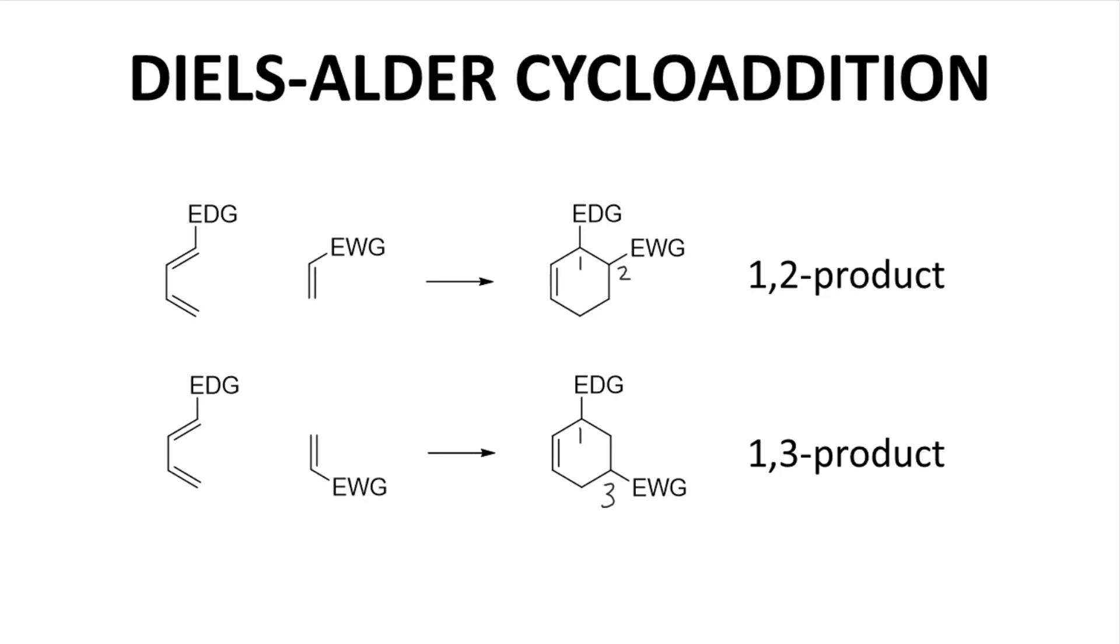The regioselectivity of this reaction is determined by the electronic bias of the electron donating and electron withdrawing groups. The electron donating group is electron rich and polarizes the diene in this manner. Note that these are not formal charges, but instead partial charges to demonstrate the electronic bias of the diene. The electron withdrawing group is electron poor and polarizes the dienophile in this manner. In the top pathway, the opposite charges align and the 1,2 product is favored.